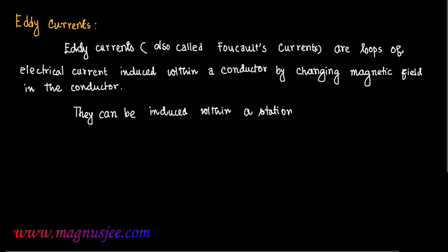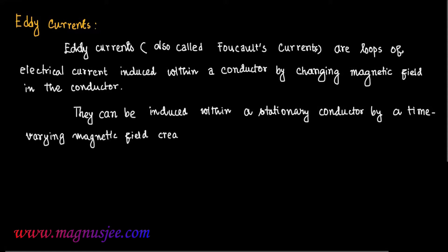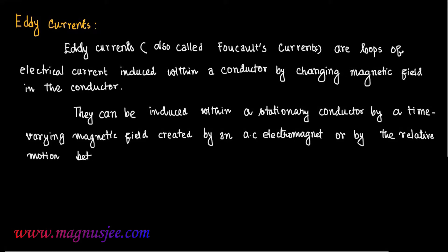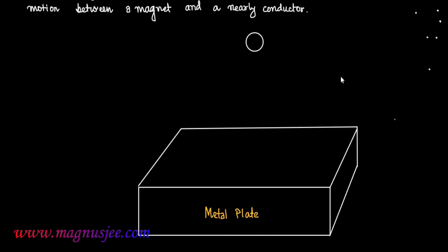They can be induced within a stationary conductor by a time-varying magnetic field created by an AC electromagnet, or by the relative motion between a magnet and a nearby conductor.